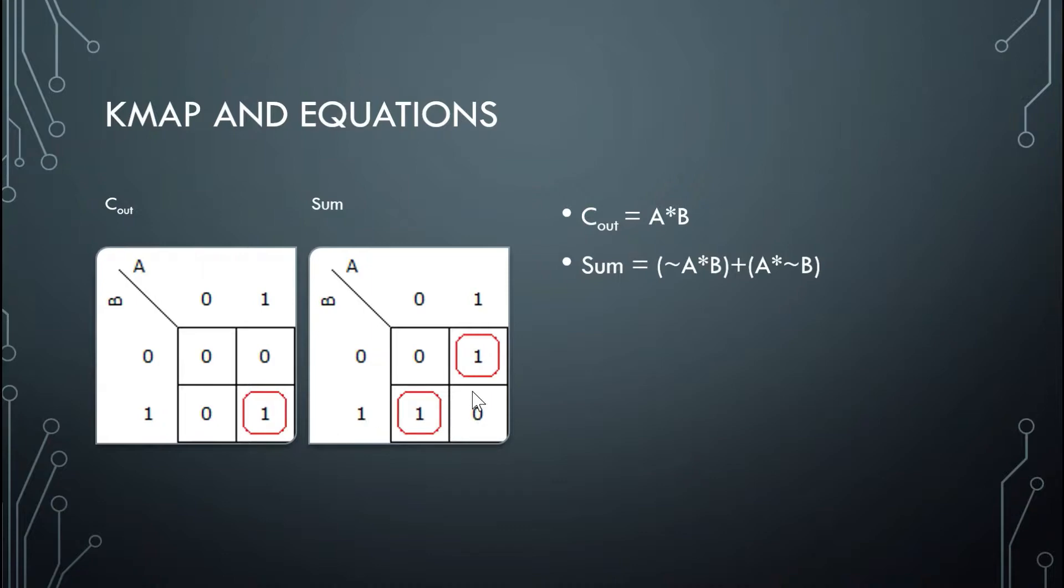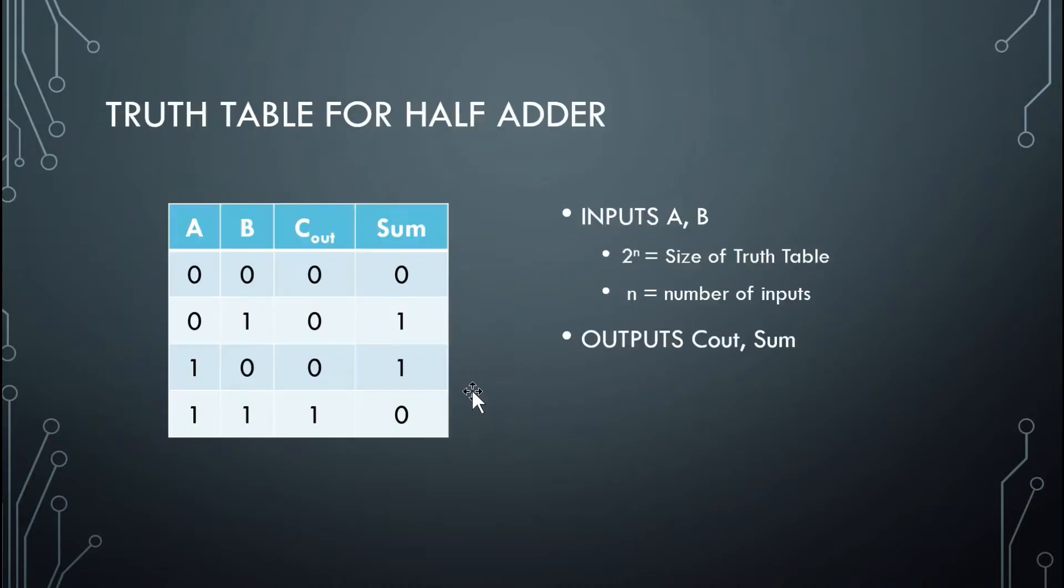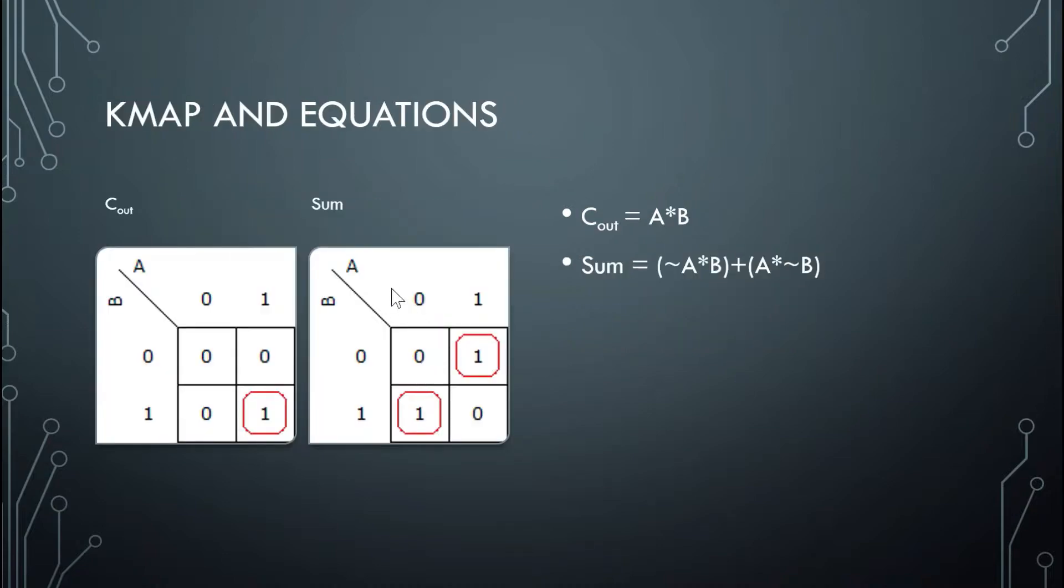Next, the Sum. We need to find out when the Sum is going to be high. So we go back to our truth table. The Sum is high when A is low and B is high, and the Sum is also high when A is high and B is low. So when A is high and B is low, we put a 1. And when A is low and B is high, we put a 1.